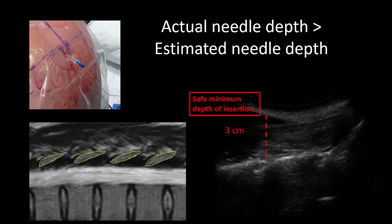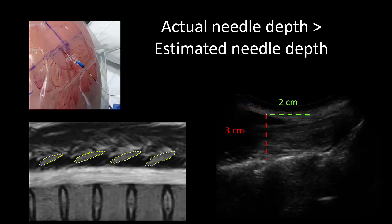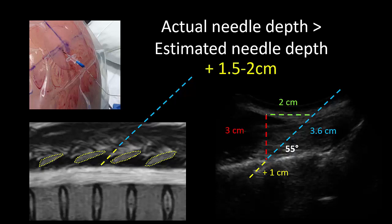Knowing the safe minimum depth is helpful, particularly in a larger patient, as you no longer worry that your needle is going in five or six centimeters or more before you get any tactile sense of where you are. If you start your insertion two centimeters inferior to the level of the space and your trajectory is at a 55-degree angle, the distance to the lamina becomes 3.6 centimeters. Thereafter, passing from the posterior surface of the lamina through the ligamentum flavum and into the space is usually at least another one centimeter, so the actual needle distance becomes closer to five centimeters than three centimeters. In general, expect that the actual needle depth will be greater than the estimated depth by about one and a half to two centimeters.